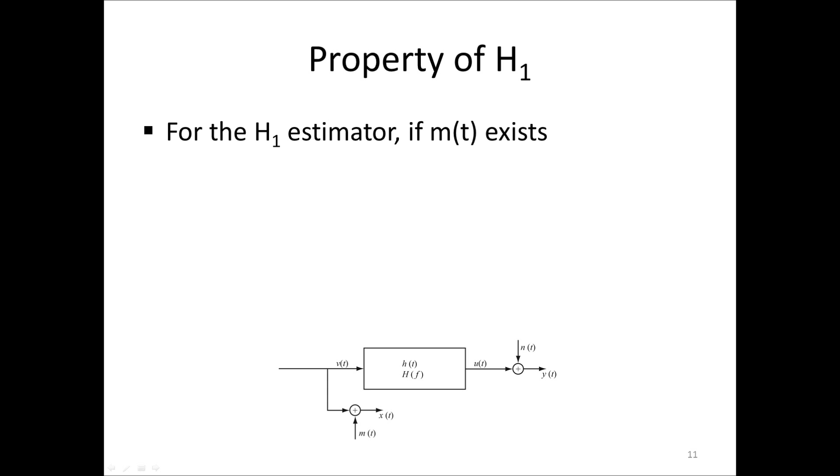We can now use these relationships to find some properties for the H1 and H2 estimators. First, let's assume that we use the H1 estimator in a case where we actually have noise on the input, which we assumed we did not. What happens then? We will get a spectrum GXX which is equal to GVV plus GMM, since V and M are independent or uncorrelated. Now, spectral densities are always larger than zero, so the estimate GXX we get will be larger than GVV, which we assume it to be equal to. Since in the H1 estimator GXX is in the denominator, the estimate will be lower than the true FRF.